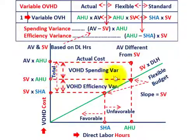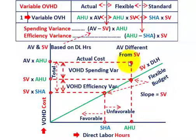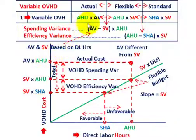We've got one other point to be concerned with — the actual cost. In this case, the actual variable rate for our variable overhead is different from and above our standard variable rate. So at the actual hours used, the point is above the flexible budget line. Moving across to the y-axis gives us the variable overhead cost based on the actual variable rate times the actual hours used — that's our actual results for the period.